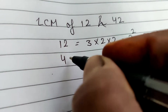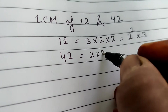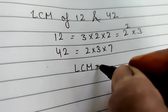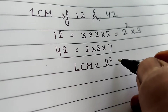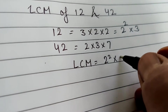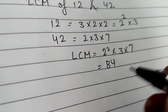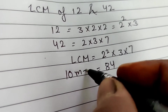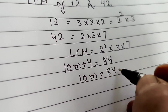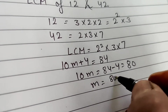42 = 2 × 3 × 7, so all powers are 1. The LCM = 2² × 3 × 7 = 84. Setting 84 = 10m + 4, we get 10m = 80, so m = 8. The right option is 8.